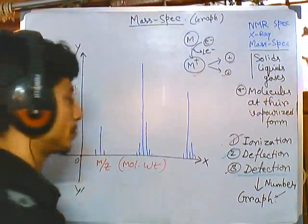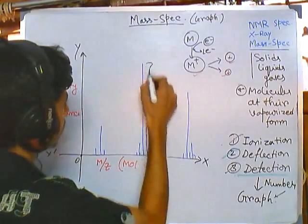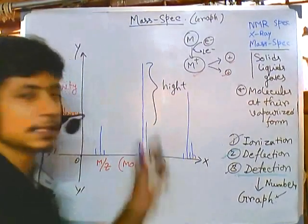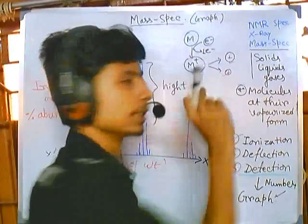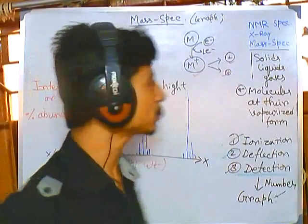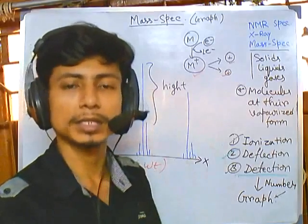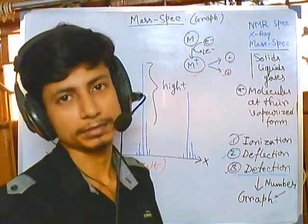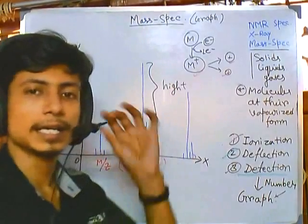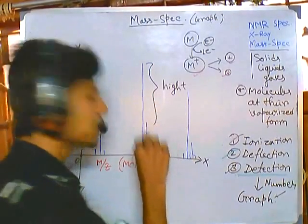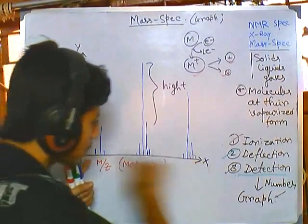From this kind of graph, what are the special features? First, what does the height of a peak denote? The height denotes the percentage abundance of that particular fragment ion or molecular ion — meaning in what amount that particular molecular ion or fragment ion is present in the sample. If you are getting a higher, larger peak, that tells us that particular species is present in our sample in a higher amount.